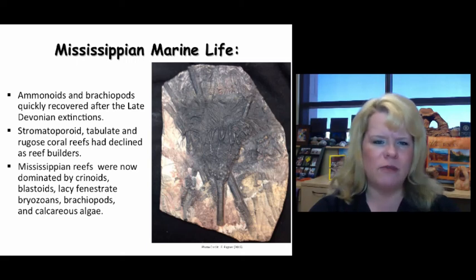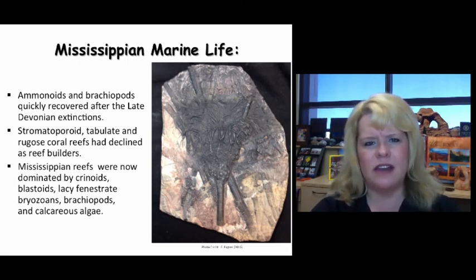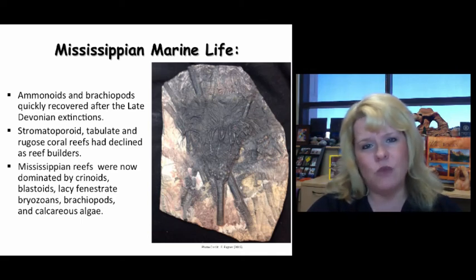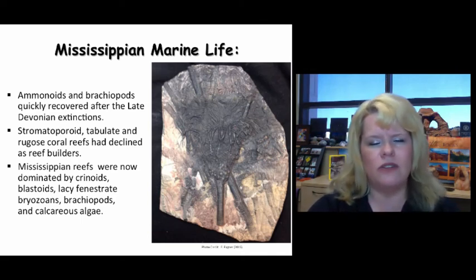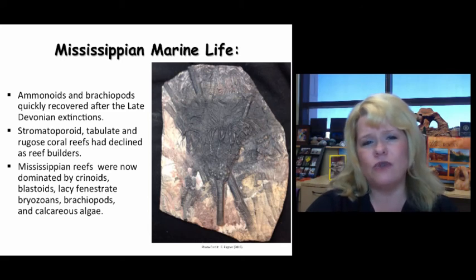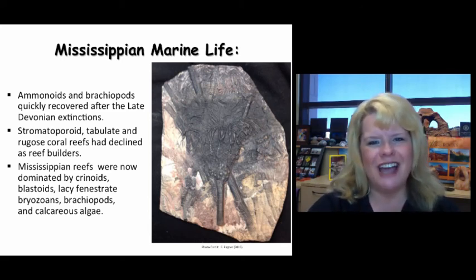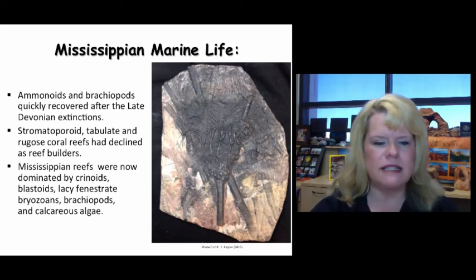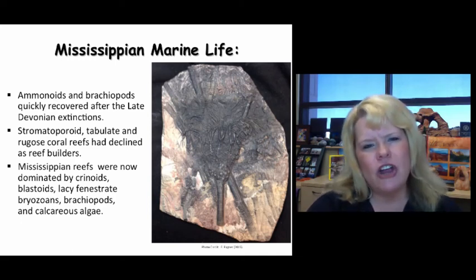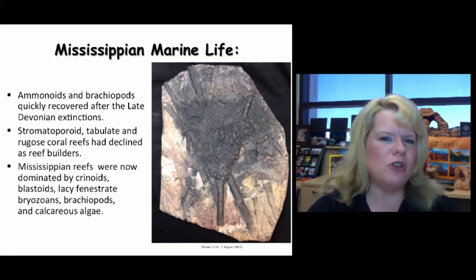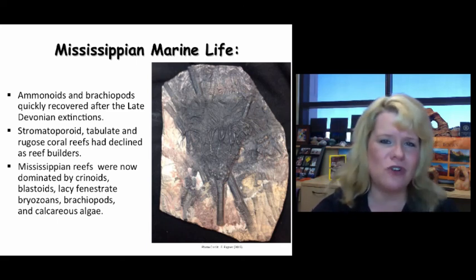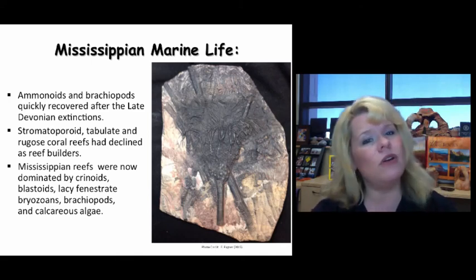When we talk about marine life from the Mississippian we need to look at a variety of life forms. Remember the Devonian concluded with the mass extinction event, so we're going to have a time of recovery. Ammonoids and brachiopods are going to be quick to fill those niches that are empty, and stromatoporids and tabulate rugose corals have declined as rebuilders. However, any kind of echinoderm is rocking and rolling during the Mississippian, along with bryozoans — especially lacy fenestrate versions. Calcareous algae and brachiopods would build large structures into reef-like materials, though nothing in comparison to the Devonian or Silurian.